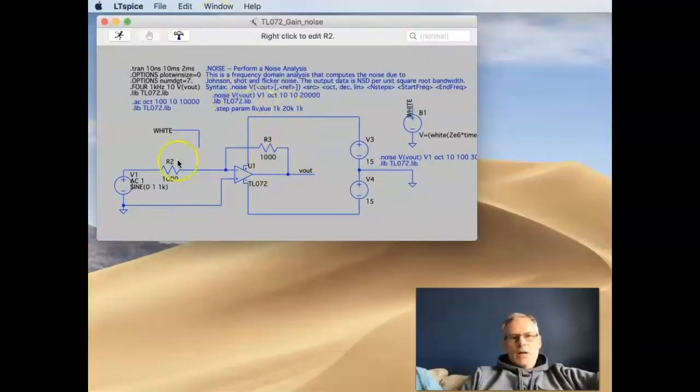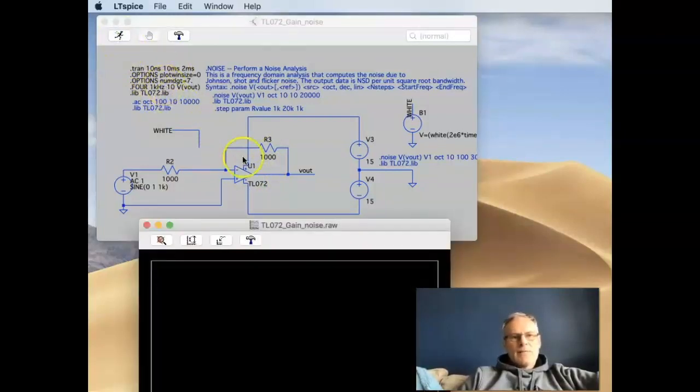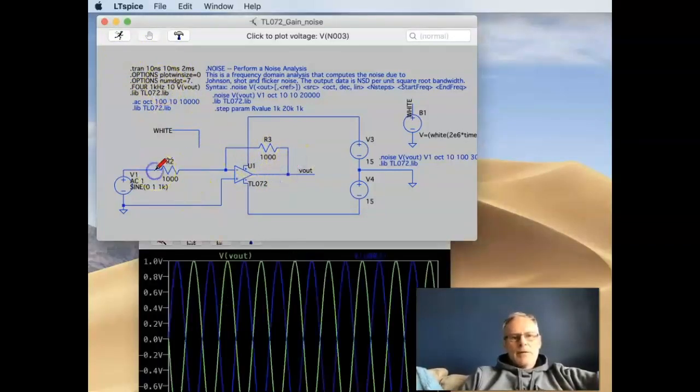If we look at a slightly more complicated circuit, all this is is an inverting amplifier. We've got feedback, 1000 and 1000, and we're going to just do a straightforward transient analysis. Look at the output here versus the input. You can see it's the same size because it's unity gain, but it's flipped in polarity.